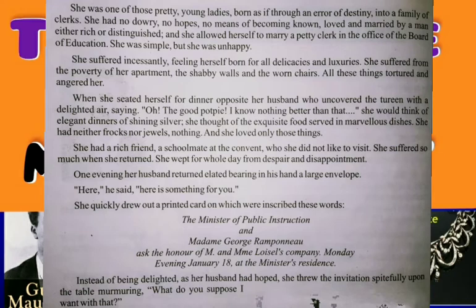She suffered from the poverty of her apartment — apartment means set of rooms, yahan pe inka ghar. Yanni yeh apni gharibi ki wajah se dukhi rehti thi. The shabby walls — is apartment ke walls bhi shabby thay, gissi huyi thay, dilapidated condition mein thay. Shabby means dilapidated, dirty. And the worn chairs — kursiyan bhi thi wahan pe, woh bhi gissi huyi thi. In cheezon ki wajah se bohot zyada dukhi rehti thi. That's why she was suffering continuously and incessantly.